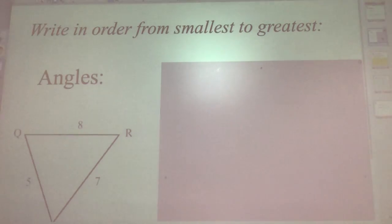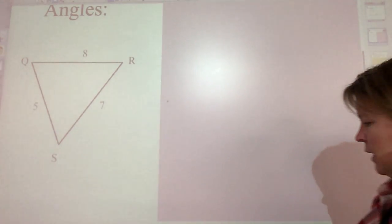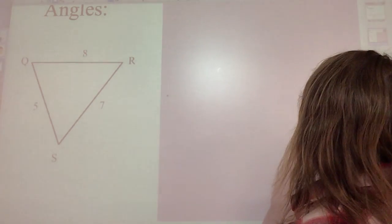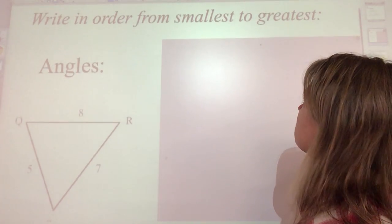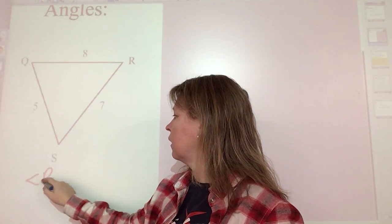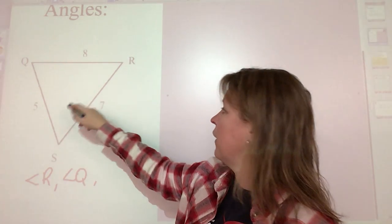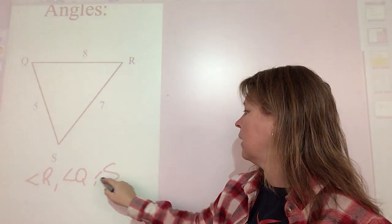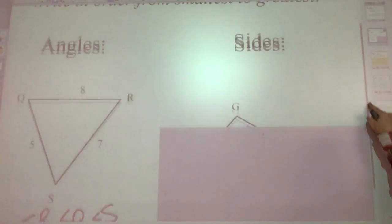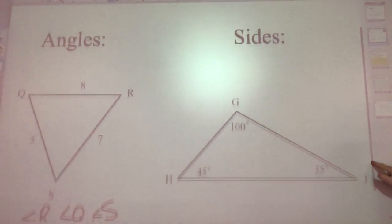Write in order from smallest to greatest the angles — you should be able to tell by the side opposite each angle. The smallest side is 5, which means the smallest angle is R. The next is 7, which means Q comes next. Then the 8 means angle S is the largest. So the order is: angle R, angle Q, angle S.